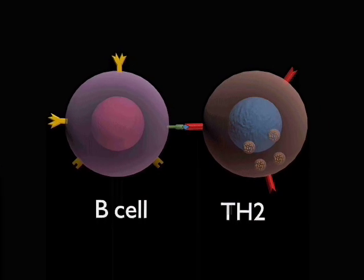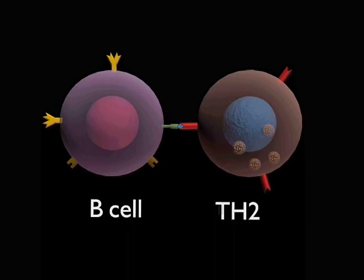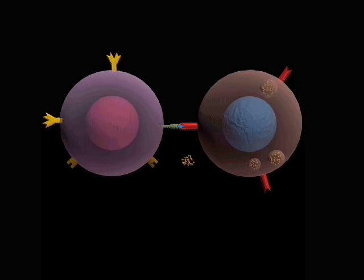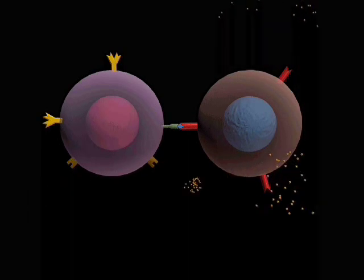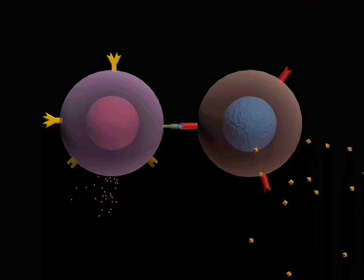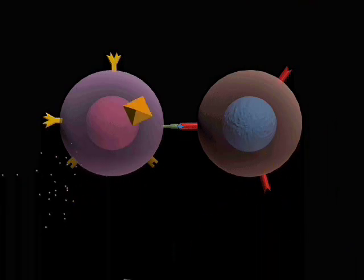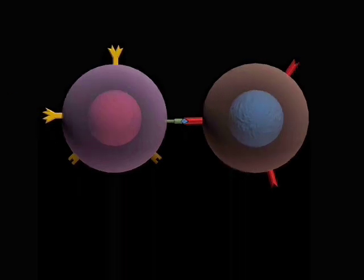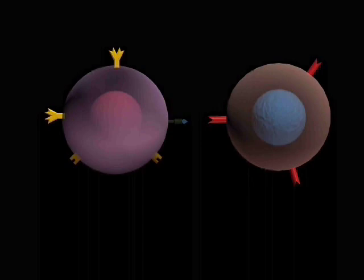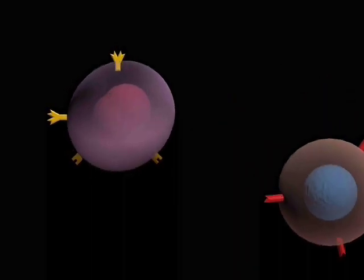Presentation of the antigen to the TH2 cell causes vesicles within the T-cell to fuse with the cell surface and release cytokines, including interleukin-4, which then binds to the interleukin-4 receptors on the B-cells. Together with co-stimulatory signals, the IL-4 activates the B-cell triggering its division.